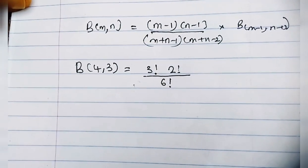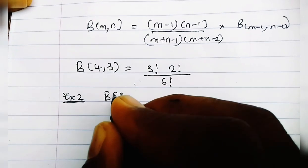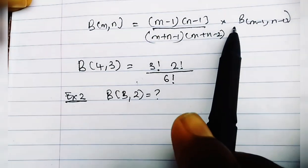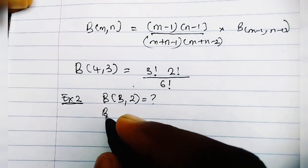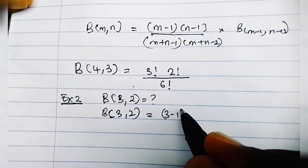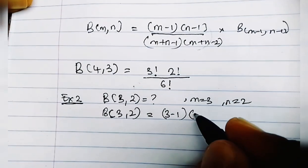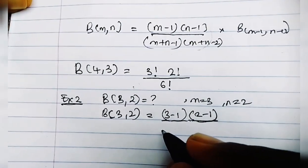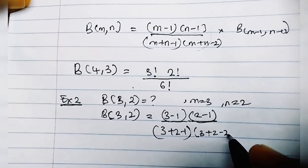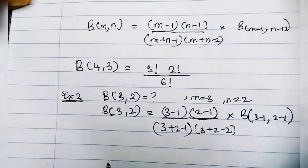Now I'm going to look at another example so we can establish the new form we want to prove. Example 2: find Beta(3, 2). Using the formula we proved, Beta(3, 2) equals (3-1)(2-1) divided by (3+2-1)(3+2-2), times Beta(3-1, 2-1).